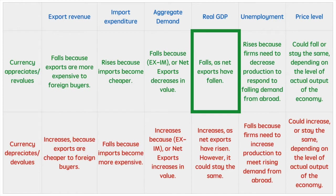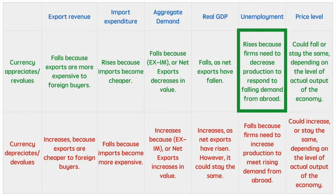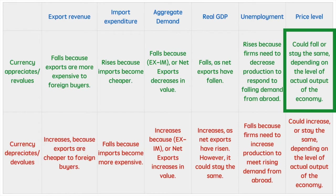If aggregate demand falls, real GDP will most likely fall. However, this still depends upon where the economy was operating in relation to potential output. With a fall in real GDP will come a rise in unemployment as firms need to decrease production to respond to falling demand from abroad. The price level could fall or stay the same, once again depending on the actual output of the economy. If it happens when there is significant excess capacity within the economy, the price level may change very little. However, if the economy is operating closer towards potential output, a decrease in the price level is more likely.